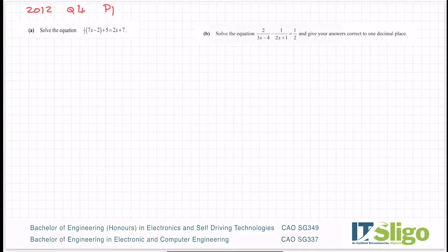Let's have a look at the 2012 question on the Leaving Cert ordinary level on algebra. It was question 4. Solve the equation: one-half times 7x minus 2 plus 5 equals 2x plus 7. We'll try not to be too intimidated by the fraction in front of the bracket. Treat it like you would any other multiplication that you would be doing.